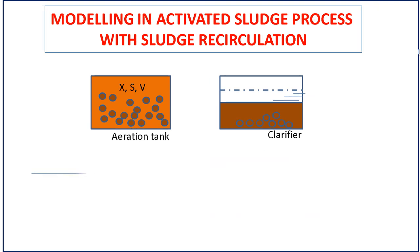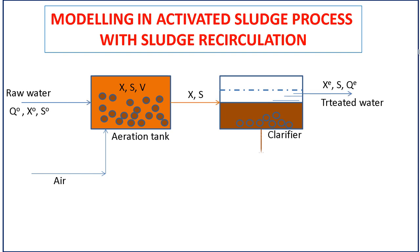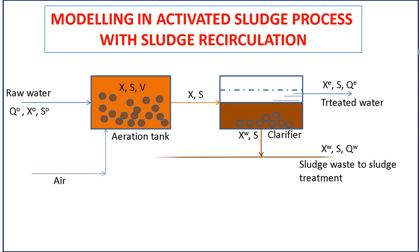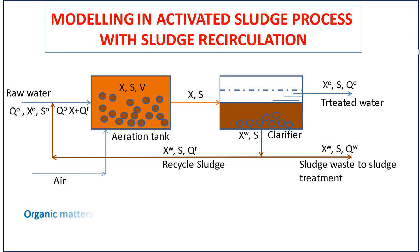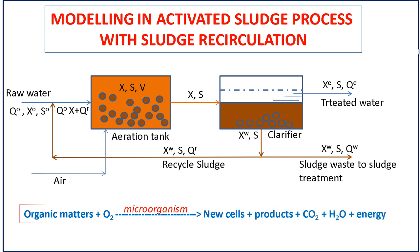To explain in more detail about the process that occurs, the activated sludge process modeling is used. Wastewater with volumetric flow rate Q0, initial microbial concentration X0, and initial substrate concentration S0 enters the aeration tank with volume V.